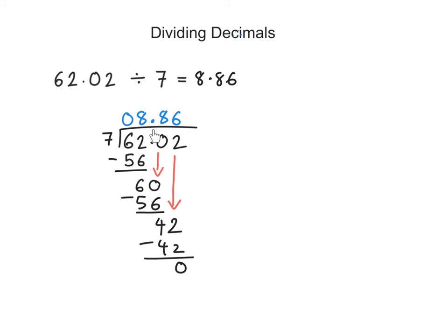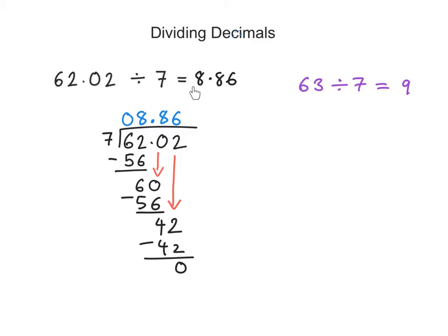Now if you are ever confused about where to place the decimal point in your answer, all you need to do is do an estimate to the division. We are dividing by 7, so think of a multiple of 7 close to 62. The closest multiple of 7 next to 62 is 63. So we do an estimate: 63 divided by 7 is clearly 9. This tells us the answer has to be in the units — it cannot be 886, it cannot be 88.6, it has to be 8.86, close to 9.